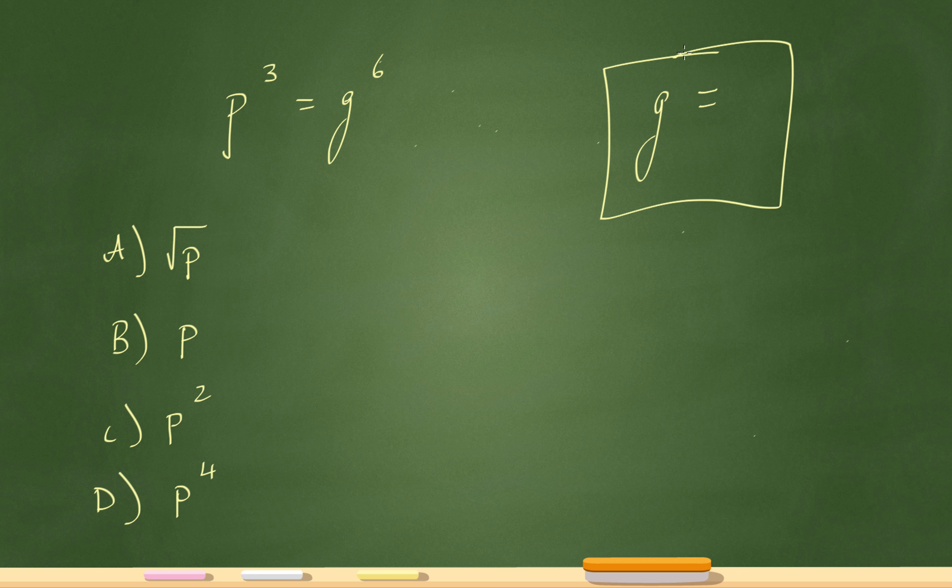The question is saying, what is the value of g in terms of p? So right now, I have g to the sixth. And what I want to figure out is, how can I rewrite g just by itself? It's actually pretty simple. So let me write it a little bit bigger over here.